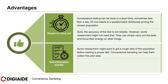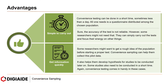And finally: get information quickly. Some researchers might want to get a rough idea of the population before starting a proper test. Convenience sampling can help them collect this pilot data. It also helps them develop hypotheses for studies to be conducted later on. Some studies also need to be conducted in a short time — convenience testing comes in handy for these cases. It helps start research by gathering information quickly, and not many resources are needed.